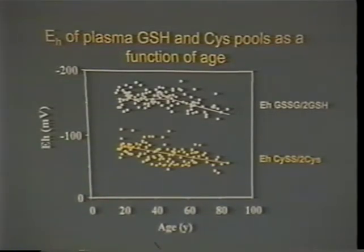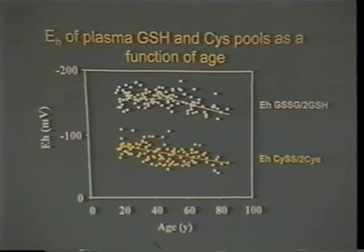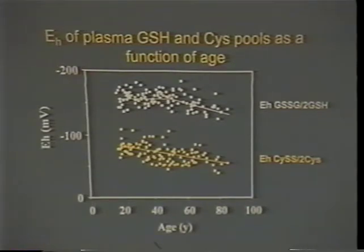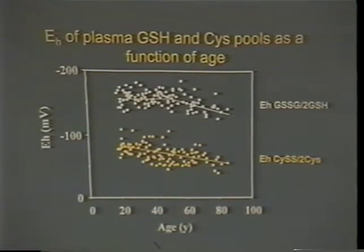There's an age-dependent change in both pools. This is why the questions about NAC are so important - it very well could be that NAC will reduce one pool and not touch the other. As we think about responses, we have to consider that there are multiple thiol-disulfide pools. Kinetically, it would appear more likely that we would affect the cysteine-cystine pool, and indeed in circulation this is the major pool.